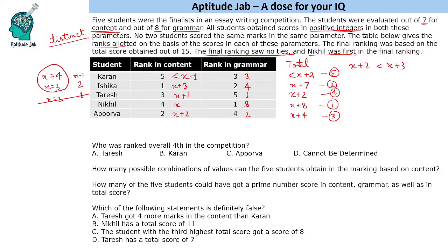Now let's look at the questions. Who was ranked overall fourth in the competition? The answer is Taresh. For the next question — how many possible combinations of values can the five students obtain in content — if X equals 4, Ishika gets 7, then 6, 5, 4 follow, and Karan must score less than 3, so he can get 1 or 2. That gives two possibilities for X equals 4.